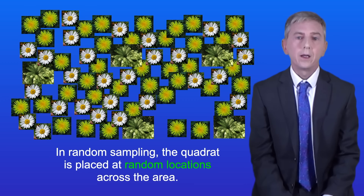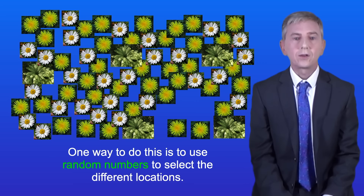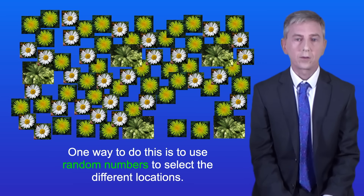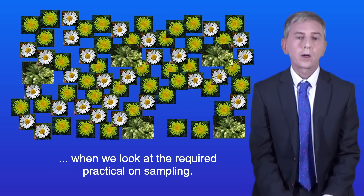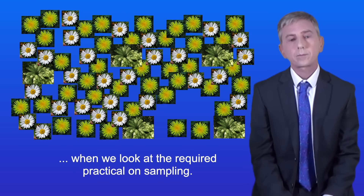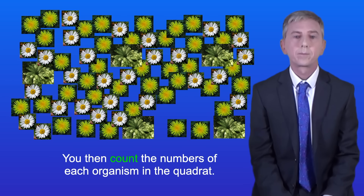In random sampling the quadrat is placed at random locations across the area, and one way to do this is to use random numbers to select the different locations. We'll see how to do this in the next video when we look at the required practical on sampling. You then count the numbers of each organism in the quadrat.